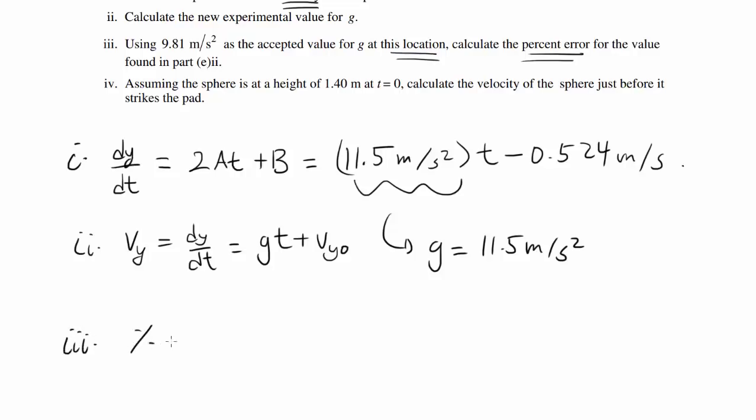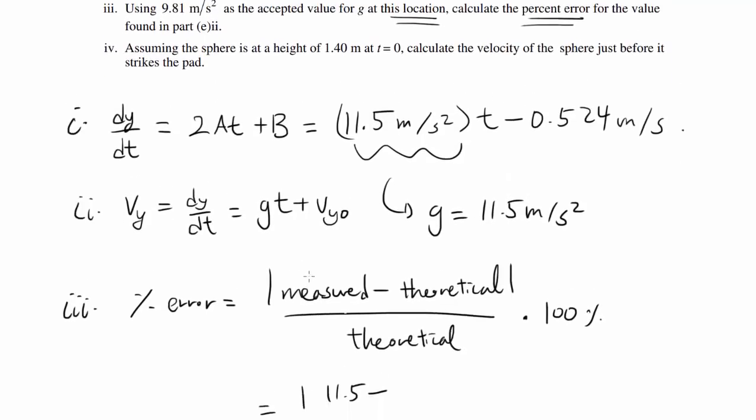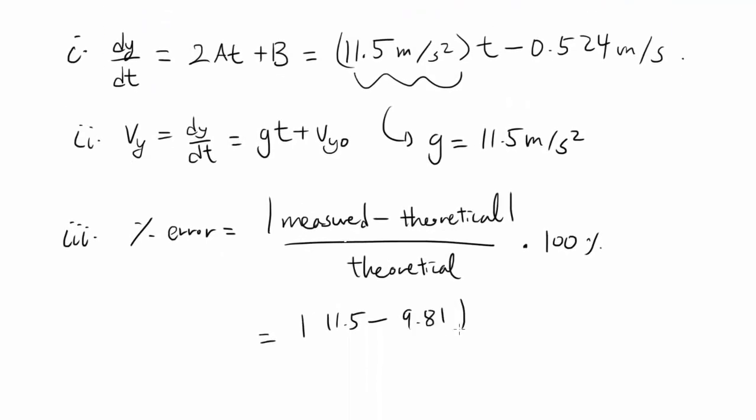Percent error is calculated using the absolute value of (measured value minus theoretical value) divided by the theoretical value, times 100%. So we want (11.5 - 9.81) / 9.81 times 100%. Plugging this in, you should get 17.2%.